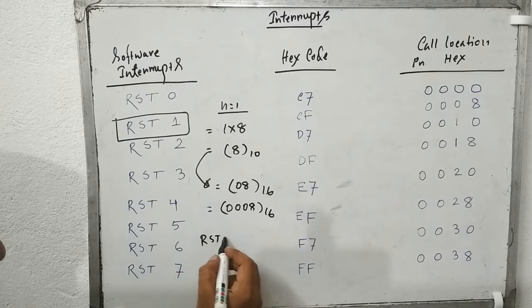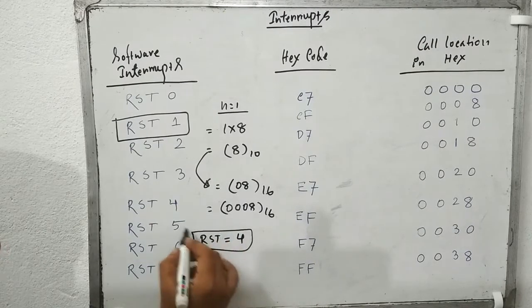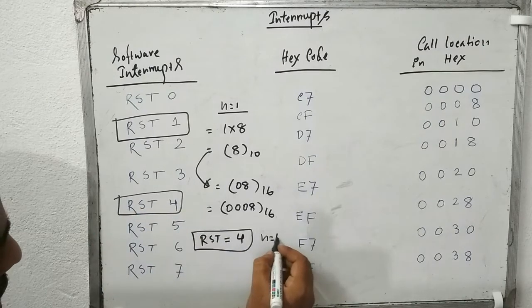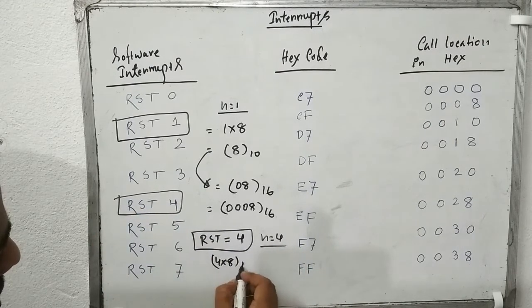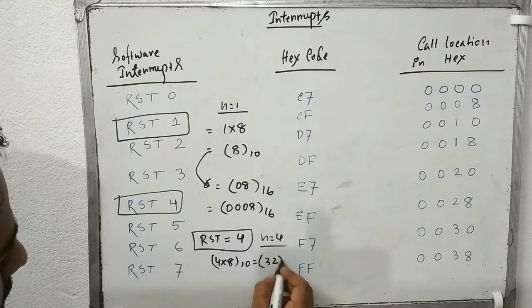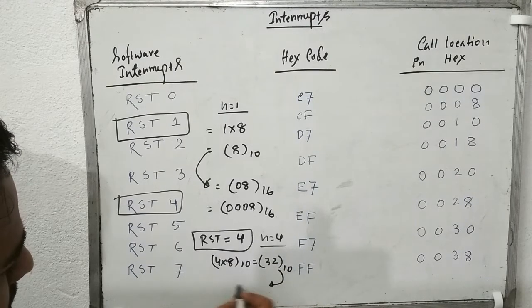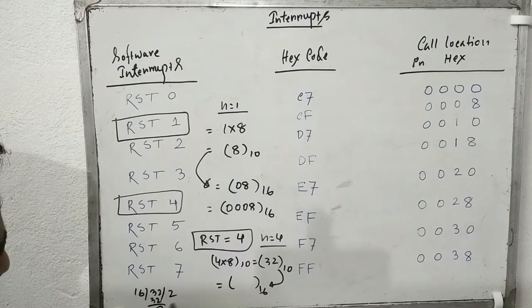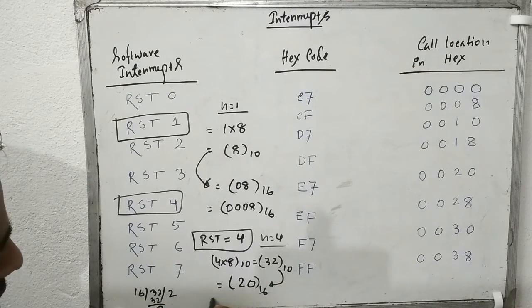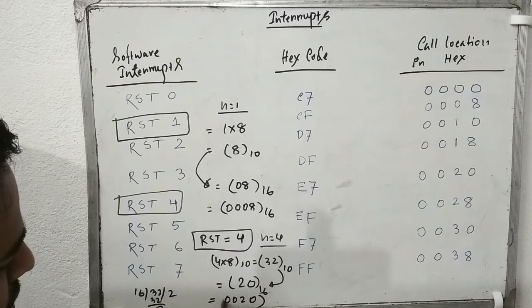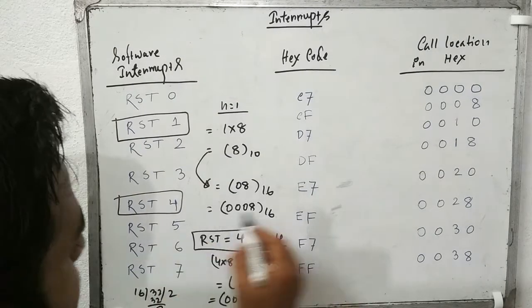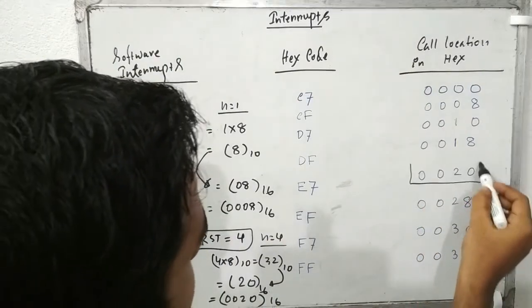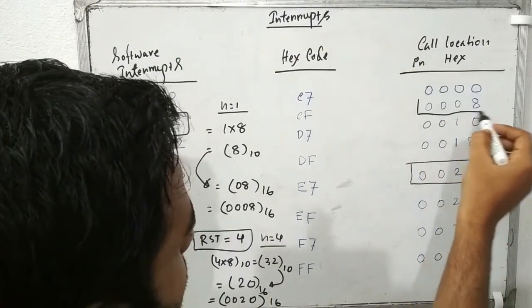Let's also take RST 4, where N equals 4. So 4 × 8 = 32. Convert 32 into hexadecimal: 32 divided by 16 gives quotient 2 and remainder 0. Writing remainder first: 20. As a 16-bit address: 0020. So RST 4 maps to address 0020, and RST 1 maps to 0008.